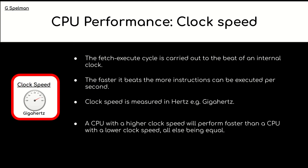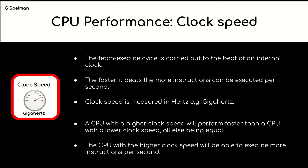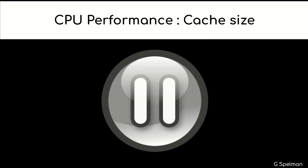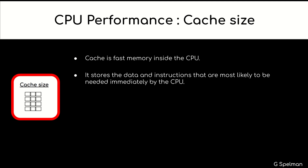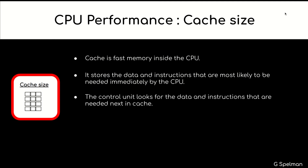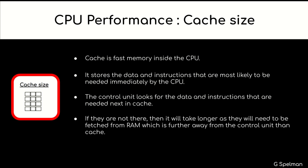A CPU with a higher clock speed will perform faster than a CPU with a lower clock speed, all else being equal. The CPU with a higher clock speed will be able to execute more instructions per second. CPU performance — cache size: cache is very fast memory inside the CPU. It stores the data and instructions most likely to be needed immediately by the CPU. The control unit looks for the data and instructions needed next in the cache. If they are not there, it will take longer as they will need to be fetched from RAM, which is further away from the control unit than cache.